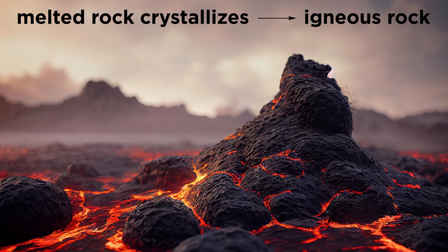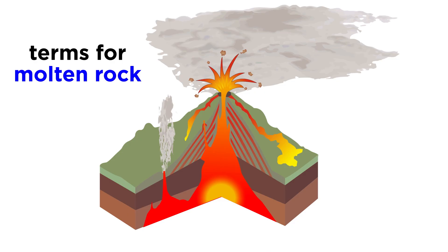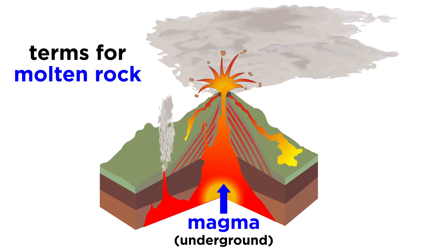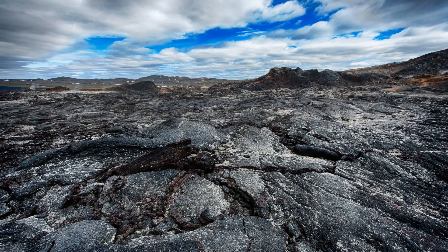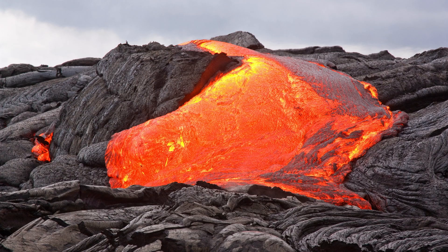Igneous rocks are formed when a mass of melted rock crystallizes. There are two terms geologists use for molten rock. When it is underground, it is called magma. Up here, it is called lava. Most igneous rocks were once mantle rock that, at some point, melted and moved toward the surface, where it cooled and solidified.